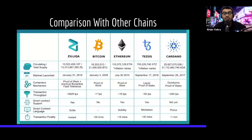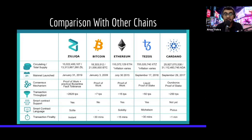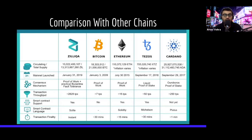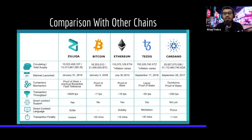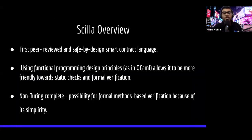This is how Zilliqa compares with other chains. The main criteria to look at is the transaction throughput, and our consensus is actually proof of work plus PBFT. This consensus allows us to have instant finality, which means that if a transaction is confirmed once on the chain, you don't need to wait for more time. Like for Bitcoin, it's recommended to wait for three block confirmations before you can accept that there is no chance of a block getting reversed. But in Zilliqa, once a transaction gets added to the chain, it's instant finality.